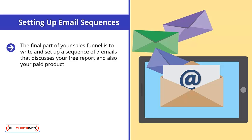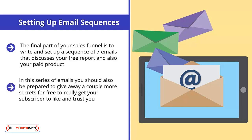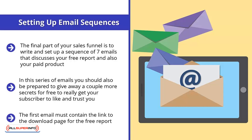Writing emails that get opened and read requires good copywriting skills. In this series of emails, you should also be prepared to give away a couple more secrets for free to really get your subscriber to like and trust you. You can outsource the writing of your emails if you want. The first email must contain the link to the download page for the free report. It is also an opportunity to introduce yourself and tell them that the secrets in the free report have provided a lot of success for you. Do not try to sell them anything in this first email.